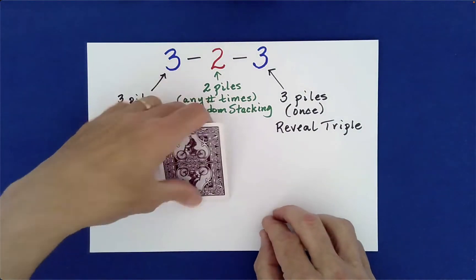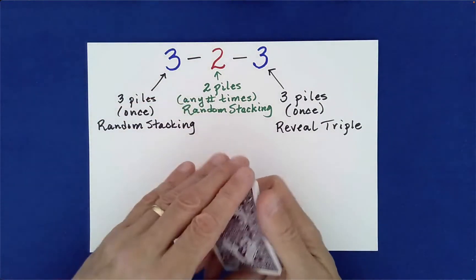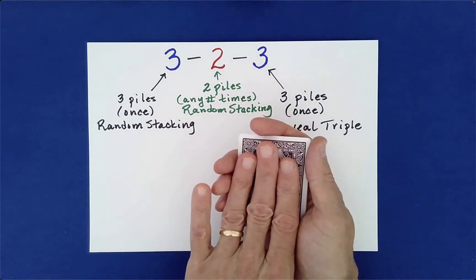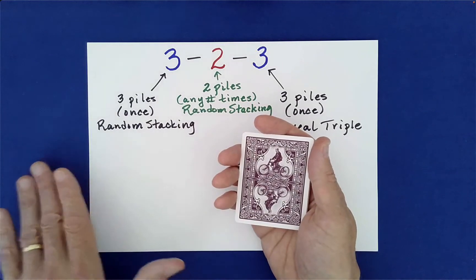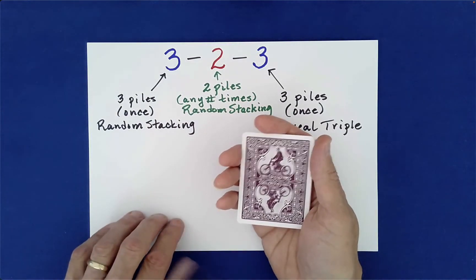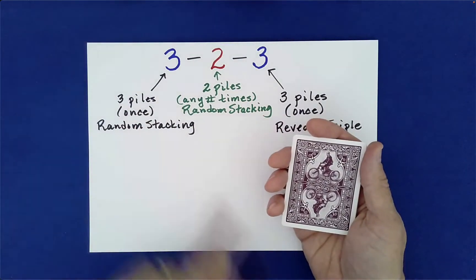So it also preserves the cyclic structure, or in other words, the special structure that we need for this to work out the way we want it to. So we've done this part, we've done the three.